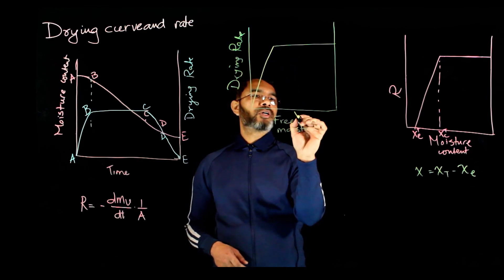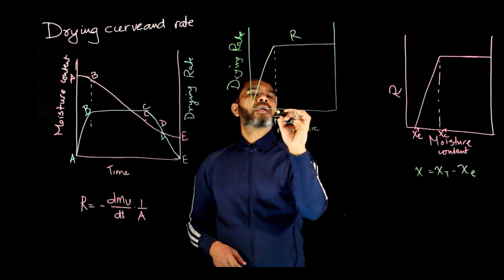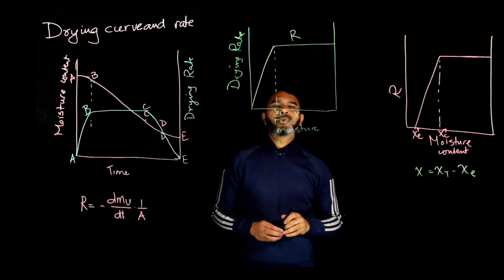This is our free moisture X, this is the drying rate, and this is X_C. At this point, the free moisture is zero.